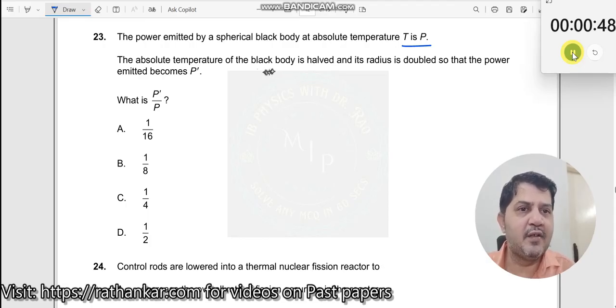The absolute temperature of the black body is halved. When you say absolute temperature, T' becomes T/2 and the radius is doubled, R' equals 2R. The power emitted is P'. Which equation? Stefan's law.